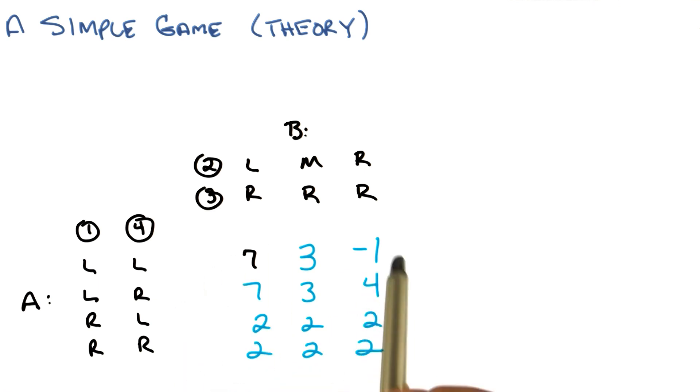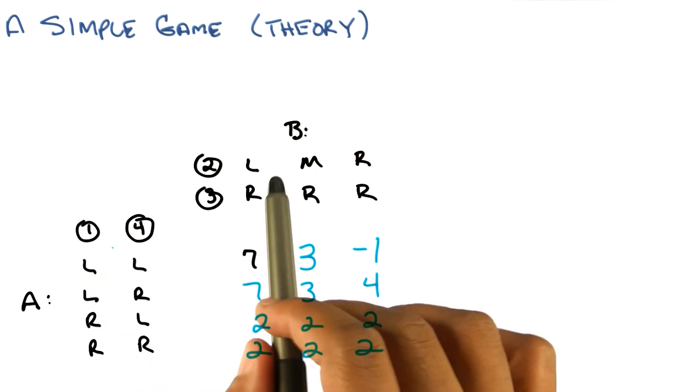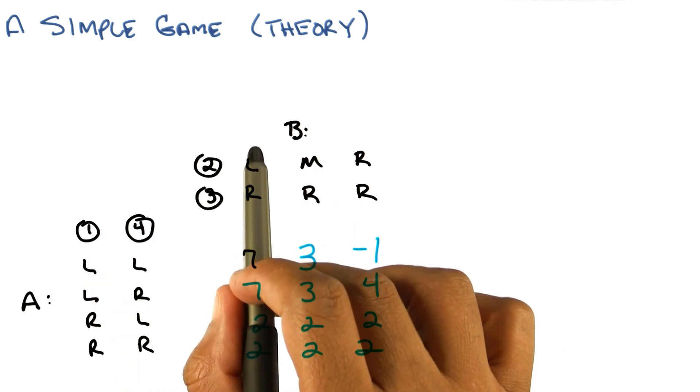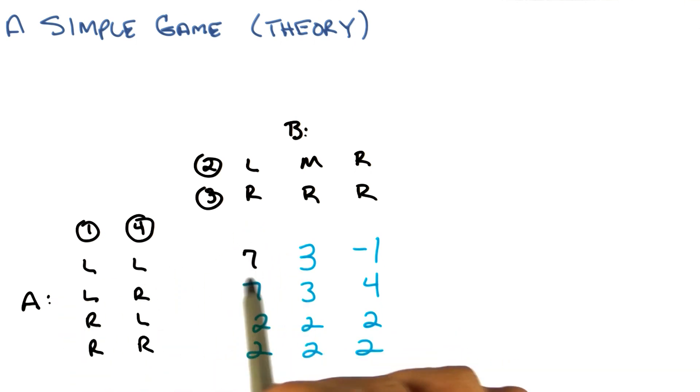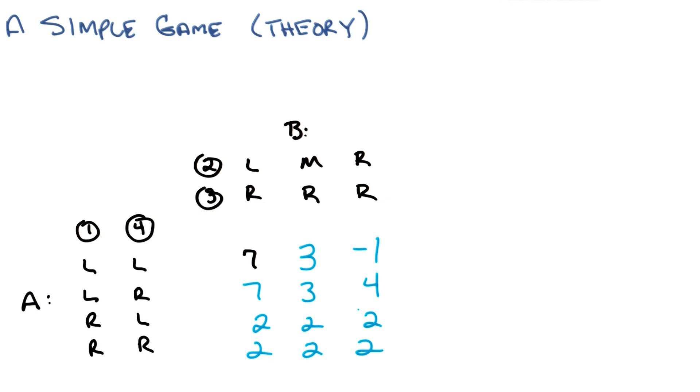Because everything about the game is captured here in this matrix. This is actually called the matrix form of the game, and it comprises everything you need to know about it. It doesn't matter what it means to go left or right or what it means to go middle or whatever. The point is, by following this strategy and this strategy, you end up with seven for A. This strategy and this strategy, you end up with two for A, period. And how you got there does not matter.